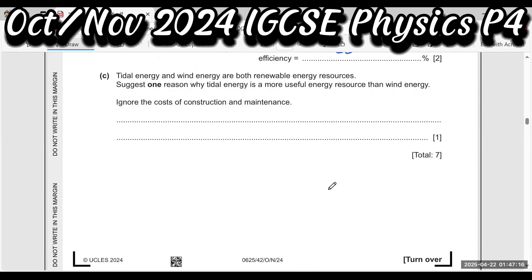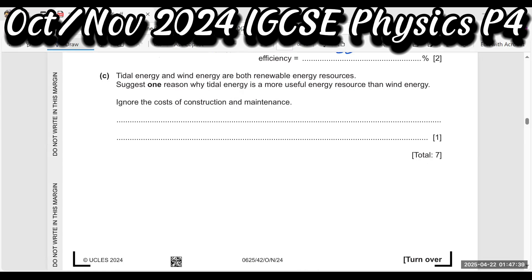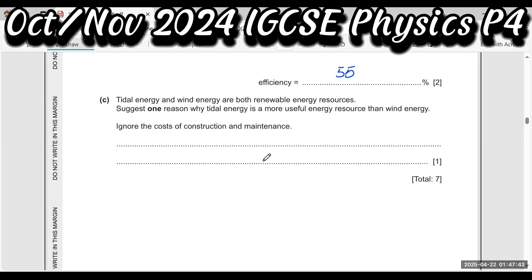Tidal energy and wind energy are both renewable energy resources. Give one reason why tidal energy is more useful than wind energy, ignoring cost, construction, and maintenance. Tidal energy is more reliable — sometimes we cannot get wind properly, but tidal patterns are predictable.